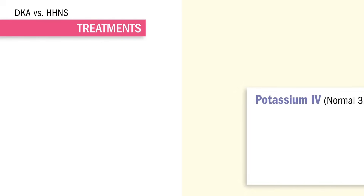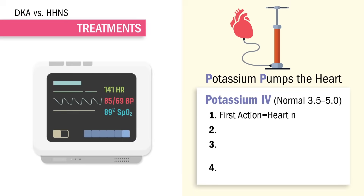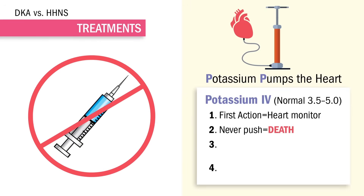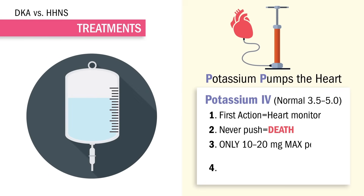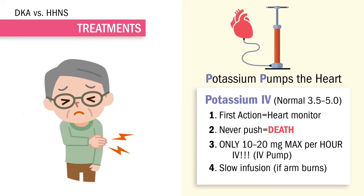A side note about potassium: think potassium pumps the heart. The four rules of potassium revolve around protecting the heart. Number one: first action is heart monitor placement. Second: never push potassium — this means sudden death, the heart will cramp up and not pump anymore. Third: we only do 10 to 20 mEq max per hour — not 30 minutes, not 45 minutes, a full 60 minutes or more, usually around four hours. And lastly, we always put potassium on an IV pump — never a solo drip. It's too risky. Slow the infusion pump if the arm starts burning.